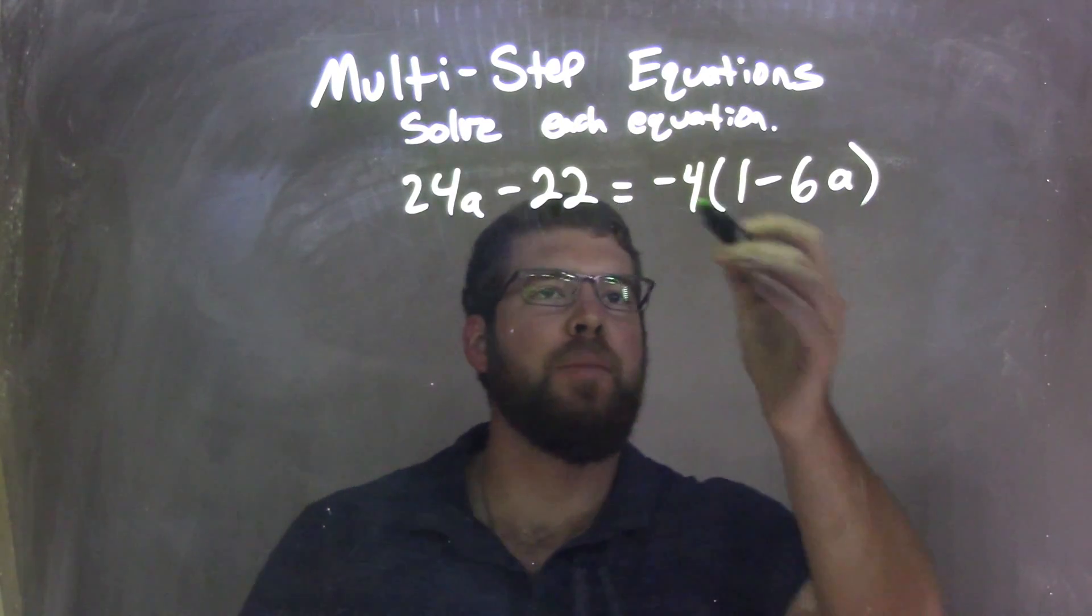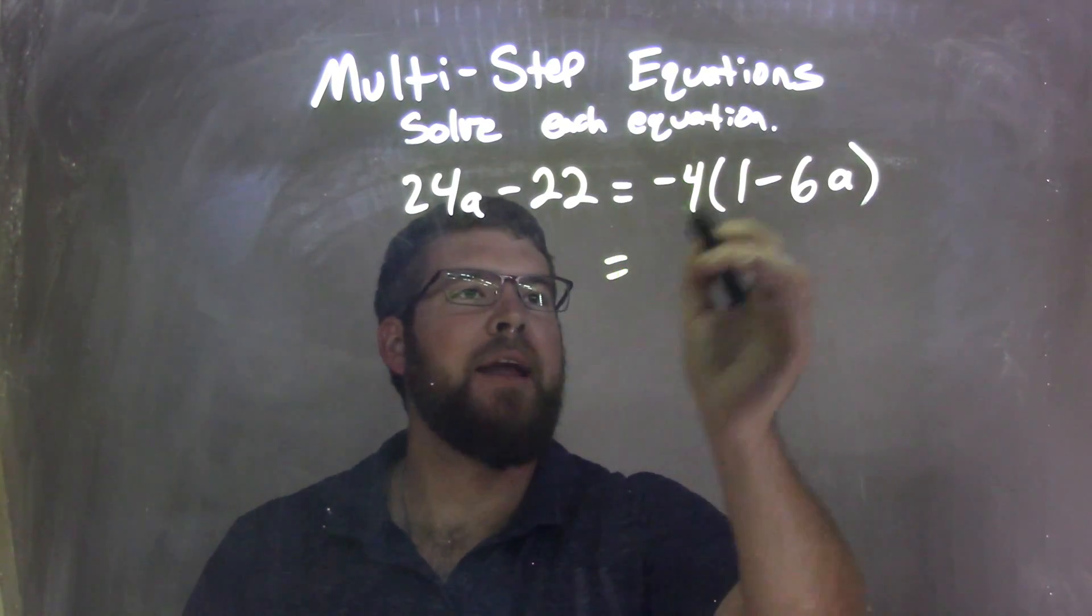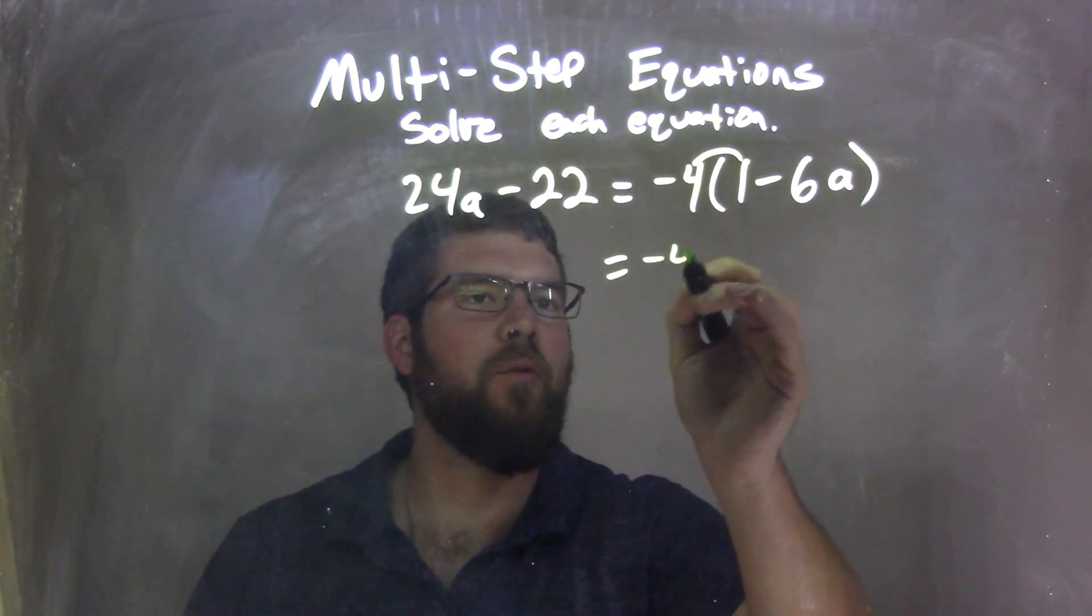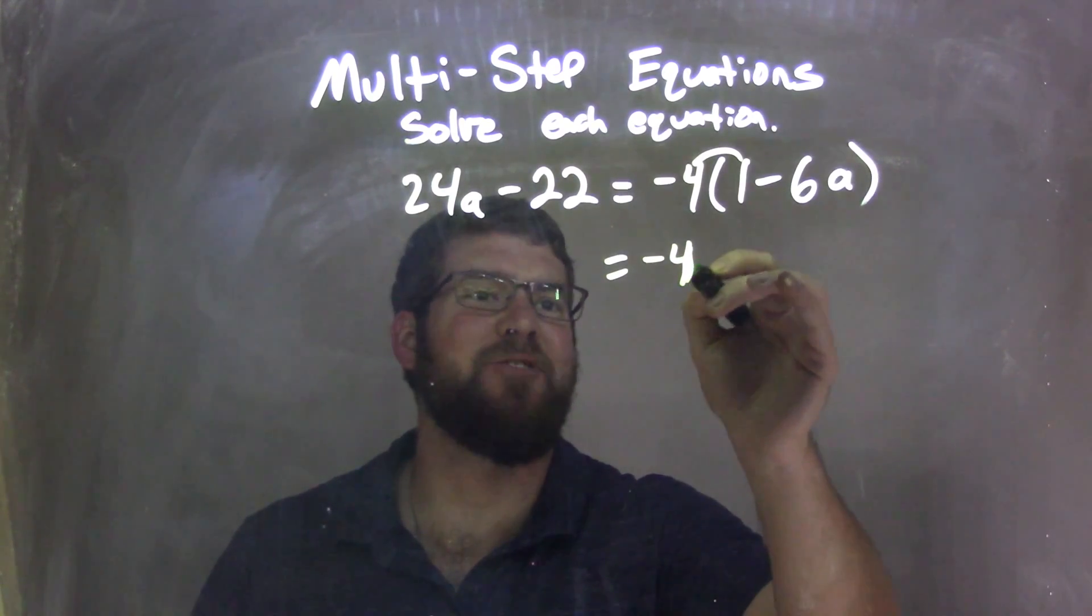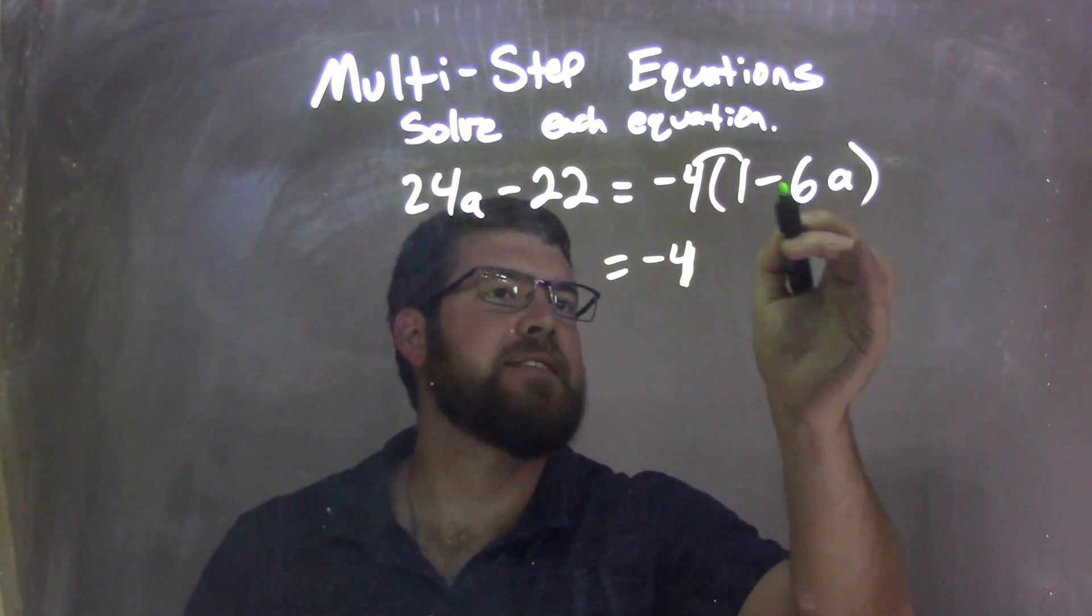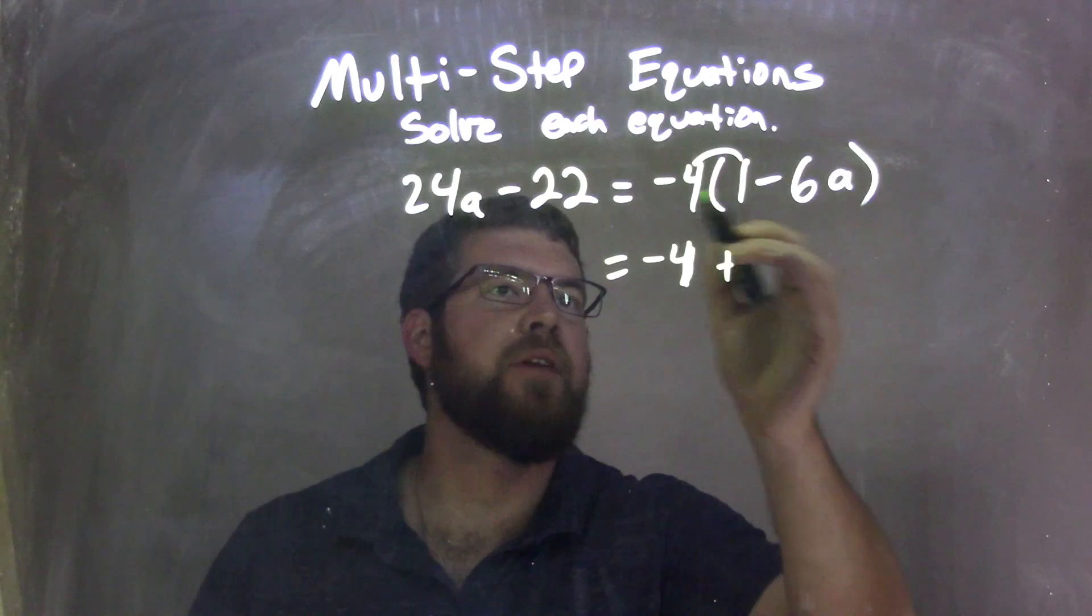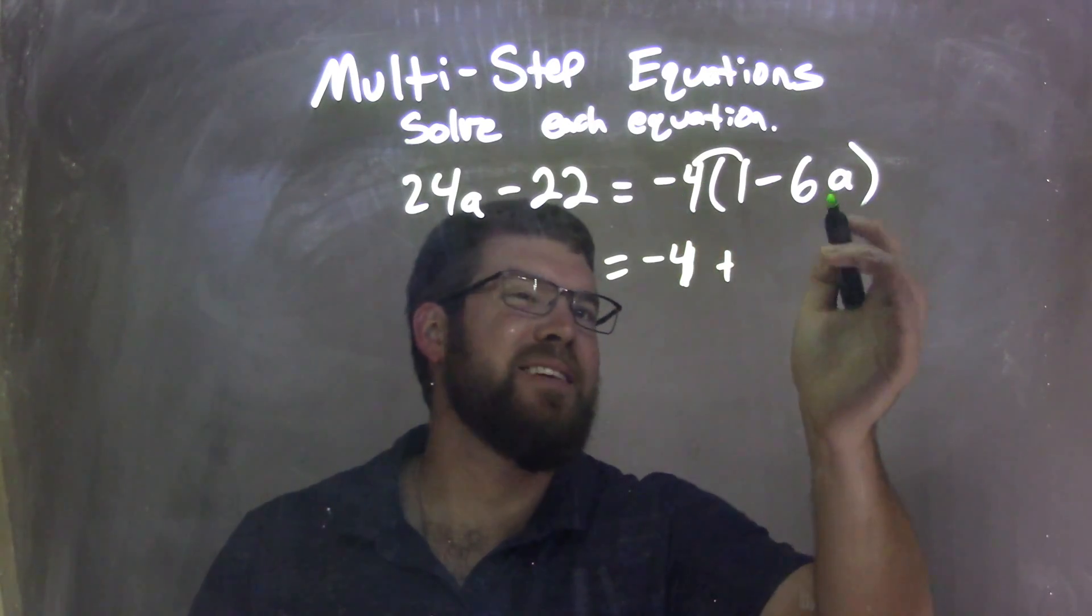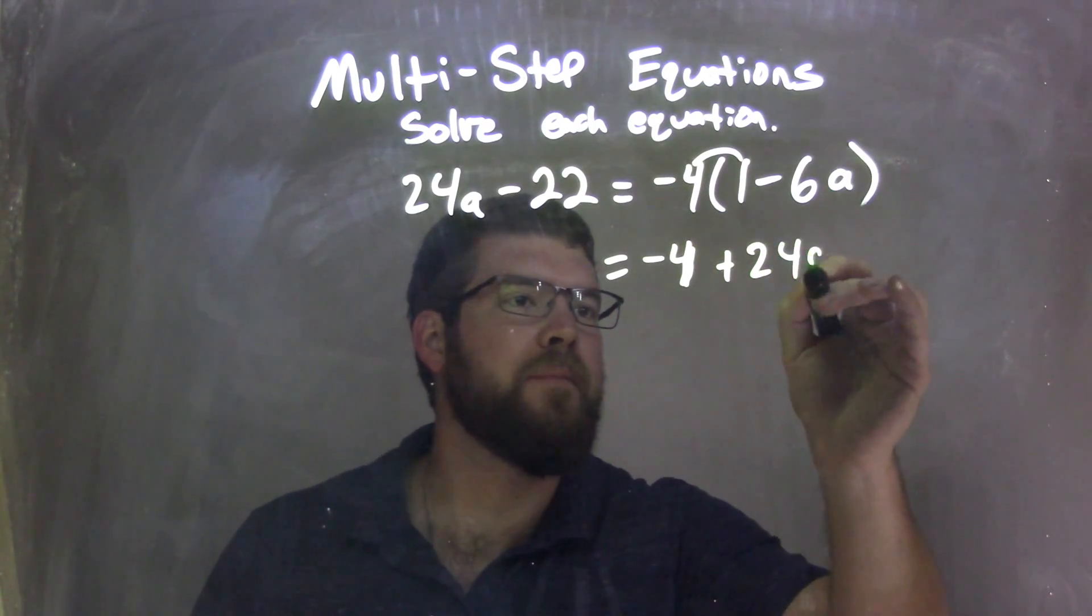Well, first thing, I'm going to distribute that negative 4. So negative 4 times 1 is negative 4. And then we have minus 6a. Well, plus is negative, right? So negative 4 times negative 6a is positive 24a. Fantastic.